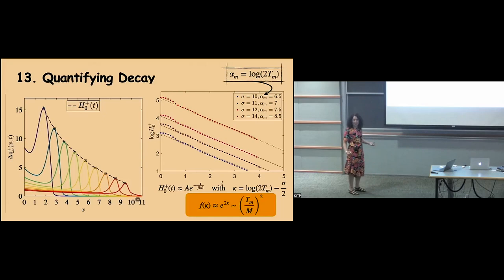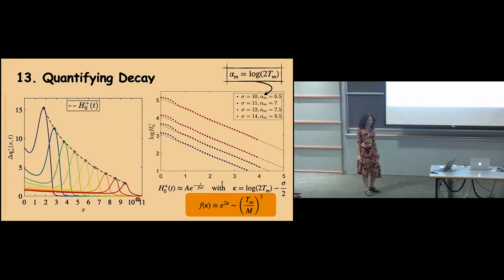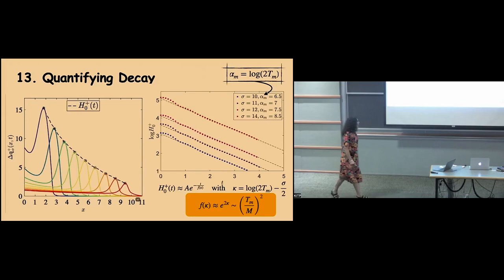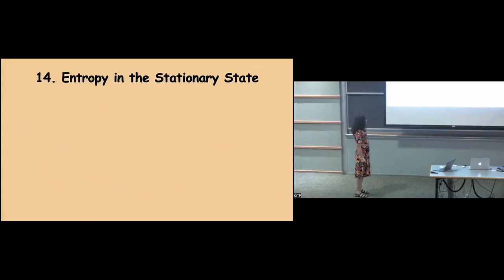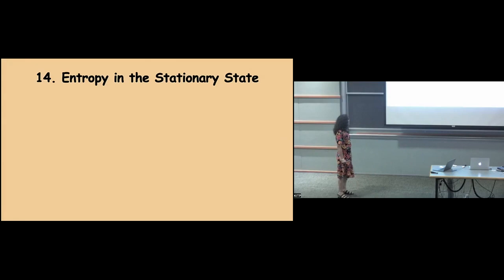There are all these features you can look at, and we did a lot of analysis in our third paper trying to identify universal behavior of this decay. The other thing I wanted to show you is entropy. This is the latest work with Pasquale and David — not yet published — but I wanted to show you two pictures that emerged from that work. Entropy is of course very interesting in quantum many-body systems.